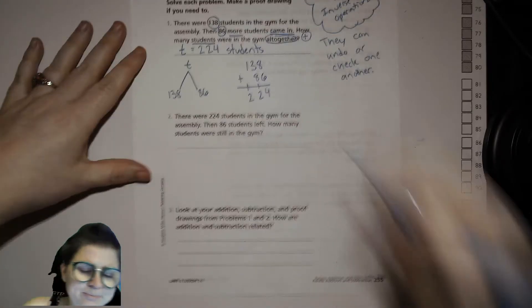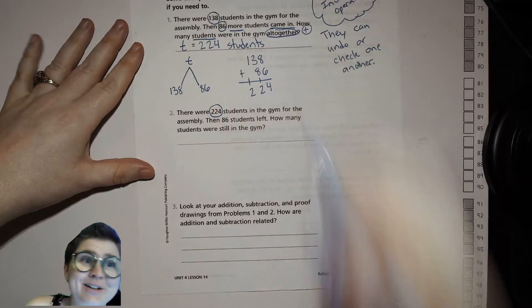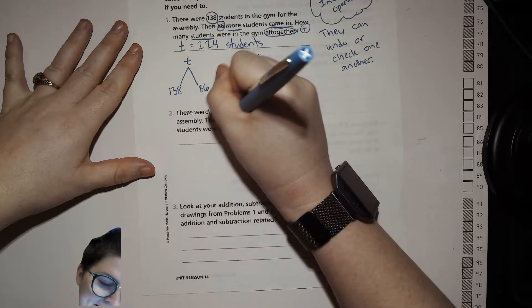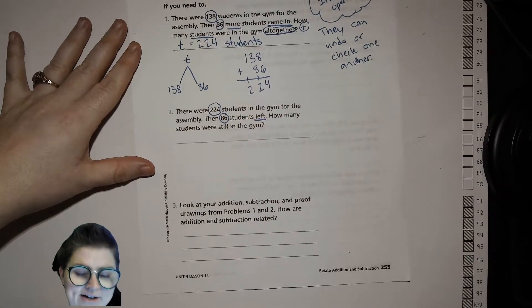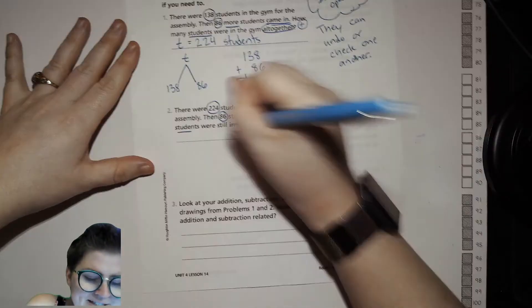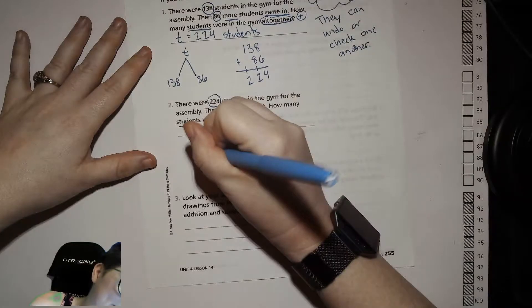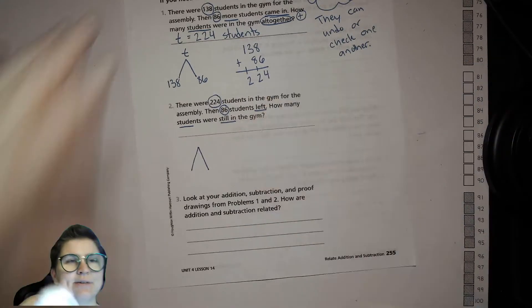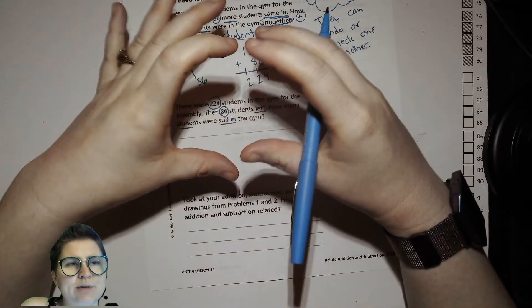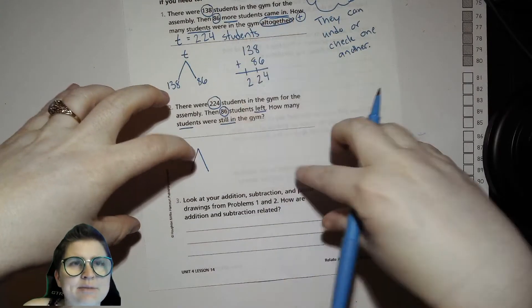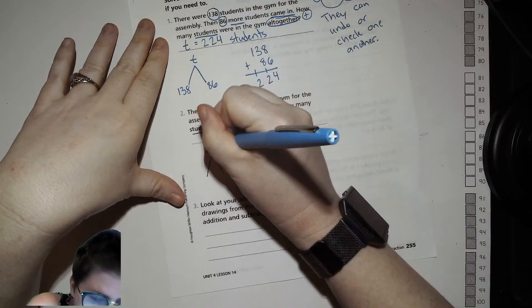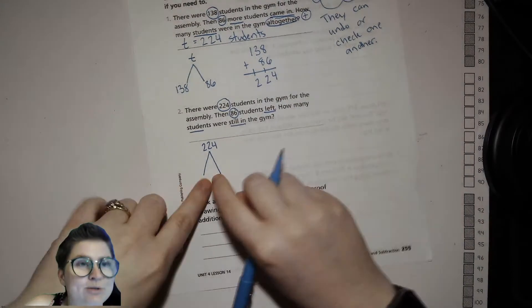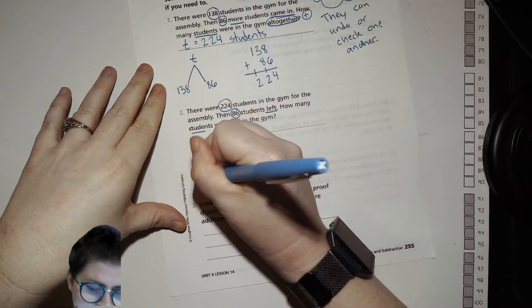Keeping this in mind, we're going to look at this other word problem. There were 224 students in the gym for the assembly, then 86 students left. They're gone, they're out of here. How many students were still in the gym? So let's make another math mountain and think about where we're going to place these numbers. It sounds like we have a total of 224 students. Some left, some stayed, but if you put them together you get the total, so we're going to put that 224 at the top. Then we can put 86 on either side, it doesn't matter because these two will get added together to make that one. So I'll put my 86 over here, and then I'll put a cursive L for 'left.'